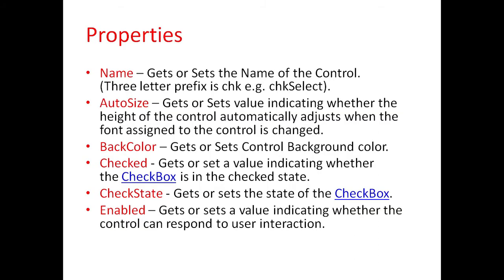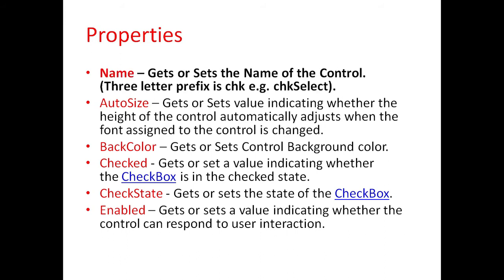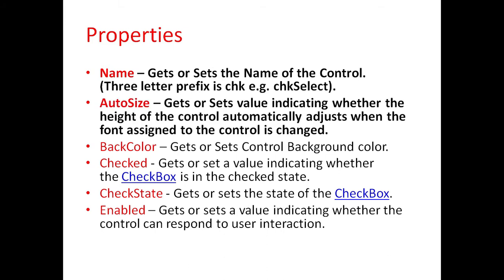Different properties for checkbox controls are: First is Name, which is used to get or set the name of the control. The three-letter prefix is chk — for example, chkSelect. AutoSize property is used to get or set a value indicating whether the height of the control automatically adjusts when the font assigned to the control is changed.